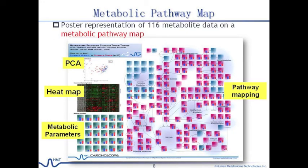Finally, the analysis report of Carcinoscope also includes a poster-sized pathway map, which shows graphs of the absolutely quantified 160 metabolites all visualized on a single metabolic pathway map, in addition to a PCA score plot, a heatmap, and 30 metabolic parameters. This is intended to facilitate group discussions on the data and inspire new approaches and hypotheses to gain insight into drug efficacy, toxicity, potential biomarkers, and the metabolic strategy of cancer cells.